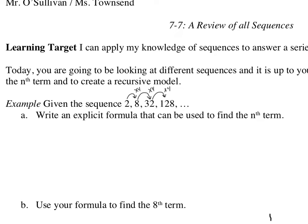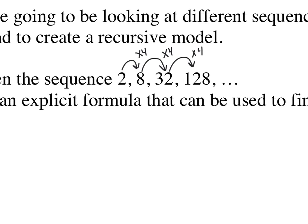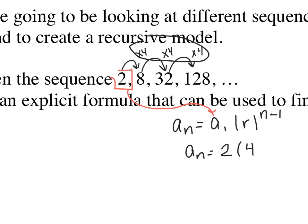a sub n equals a sub 1 times r to the n minus 1. So if I look at this question, my first term or a sub 1 was a 2. So when I write my equation, I'm going to write a sub n equals 2. And then I have to think about what I multiplied by. That's my ratio. I multiplied every single time by a 4. And then I raise it to the n minus 1. That is your final answer for part A.